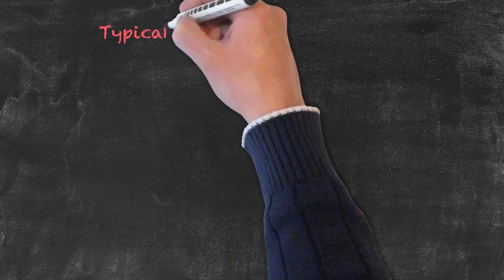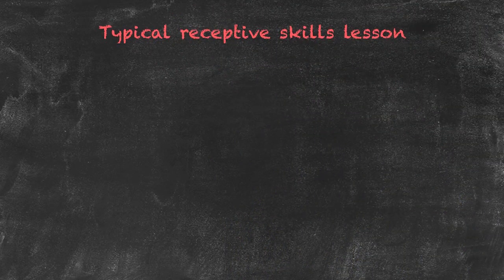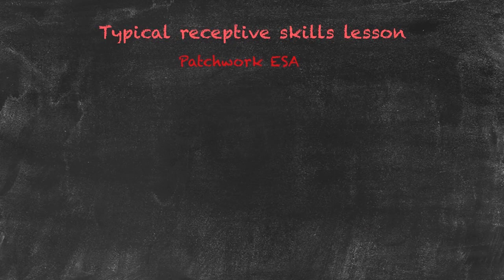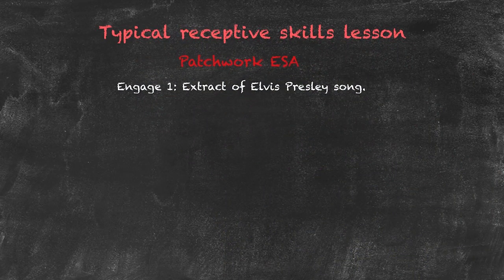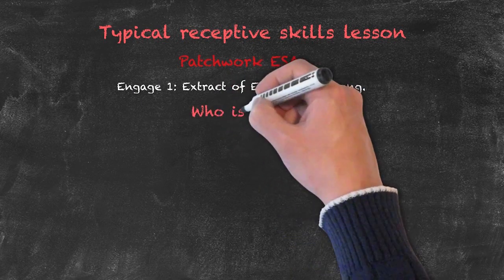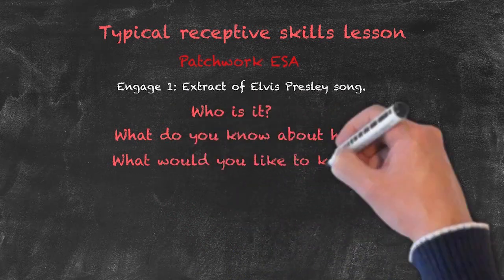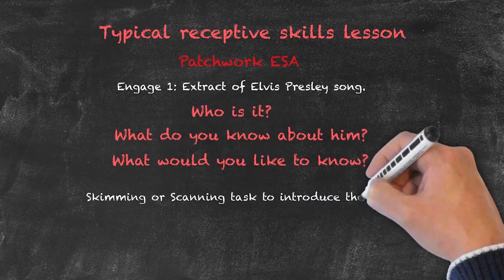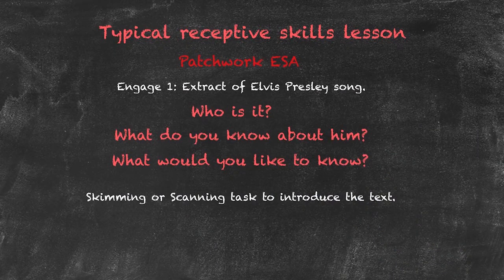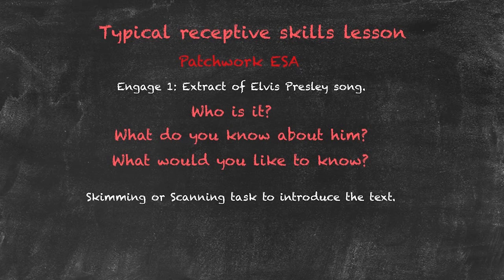Let's have a look at a typical receptive skills lesson. The main focus will be reading, although there will be some listening involved as well, and it's going to be a patchwork ESA lesson. As a patchwork lesson, it will start with an engage. We're going to play an extract of an Elvis Presley song and ask students if they know who it is and anything about him. To help generate interest, we can also ask them what they'd like to know about him. We can then introduce the text they're going to read for detail later, but at this stage just do a quick skimming or scanning exercise — at most a couple of minutes, so we don't give them an opportunity to read every single word.